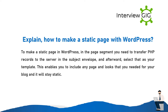Explain how to make a static page with WordPress. To make a static page in WordPress, in the page segment you need to transfer PHP files to the server in the theme folder, and afterward select that as your template. This enables you to include any page layout you want for your blog and it will stay static.